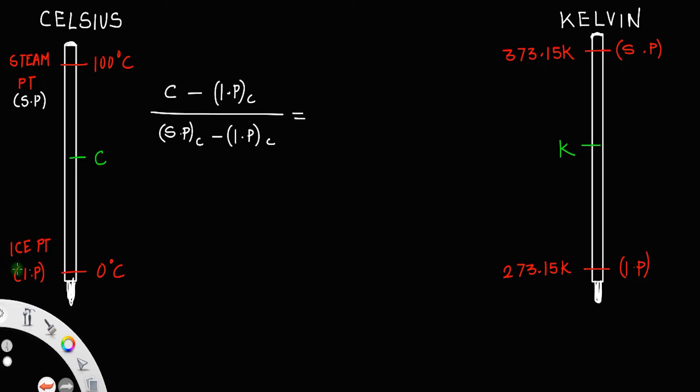This equals the same ratio for the Kelvin scale: K minus the ice point of the Kelvin scale,